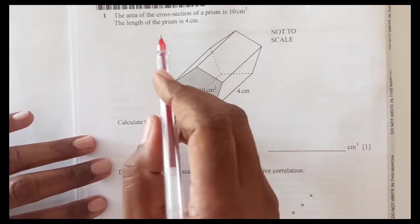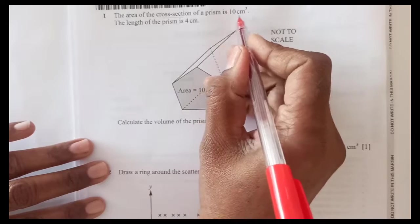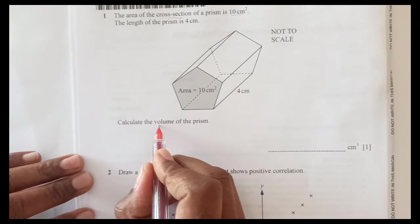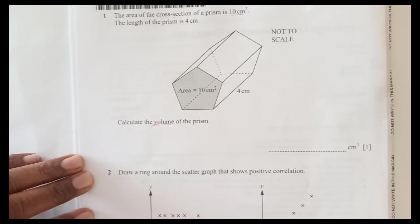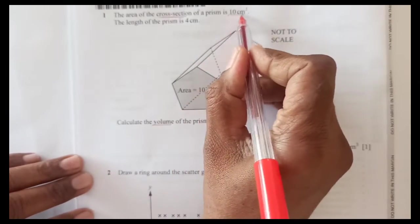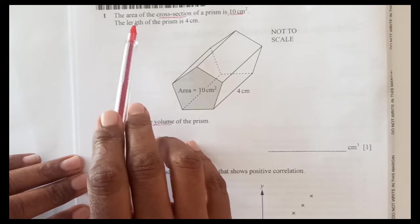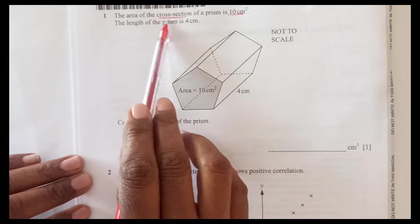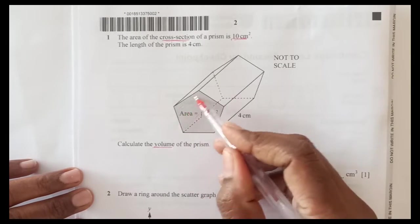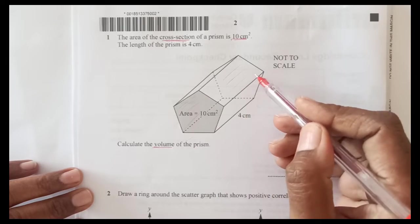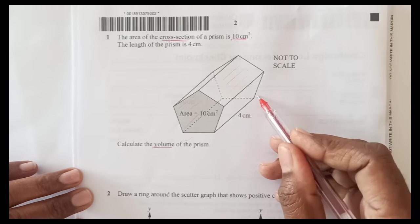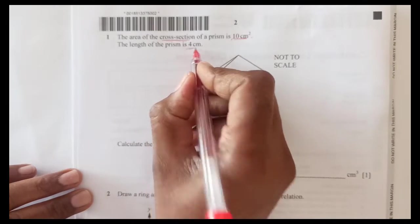The first question: the area of cross section of a prism is 10 centimetre square, the length of the prism is 4 centimetre. Calculate the volume. First thing you need to do is underline the keywords wherever you see, so you do not miss any information. The area of cross section - first of all, you need to know what is cross section. Cross section is this part, two parallel faces, like this is pentagon and you have another one here. These are the cross sections and the line joining these two cross sections is called the length of the prism which is 4 centimetre.